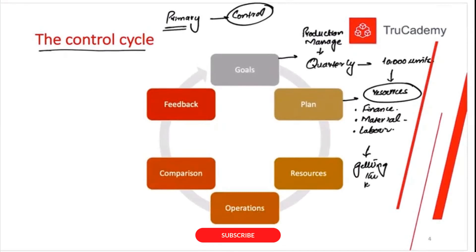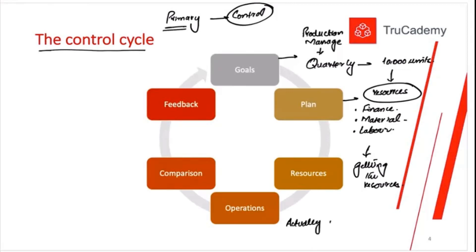After planning, we actually get the resources. Whatever we planned — the requirements — we check if we can actually obtain them. We may need to hire more employees, buy more machinery to increase production, and contact new suppliers for a more consistent supply. Once we have the resources, we implement our plan.